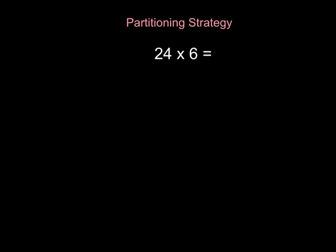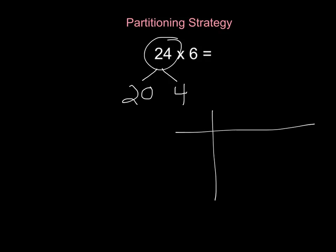Let's look at the question 24 times 6. Just like before, we're going to look at the number 24 and break it up into its place value spots: 20 and 4. Now there are two ways that you can write out the partitioning strategy. The first is using a grid. I'm multiplying everything by 6, and I write the two numbers I broke apart — 20 and 4.